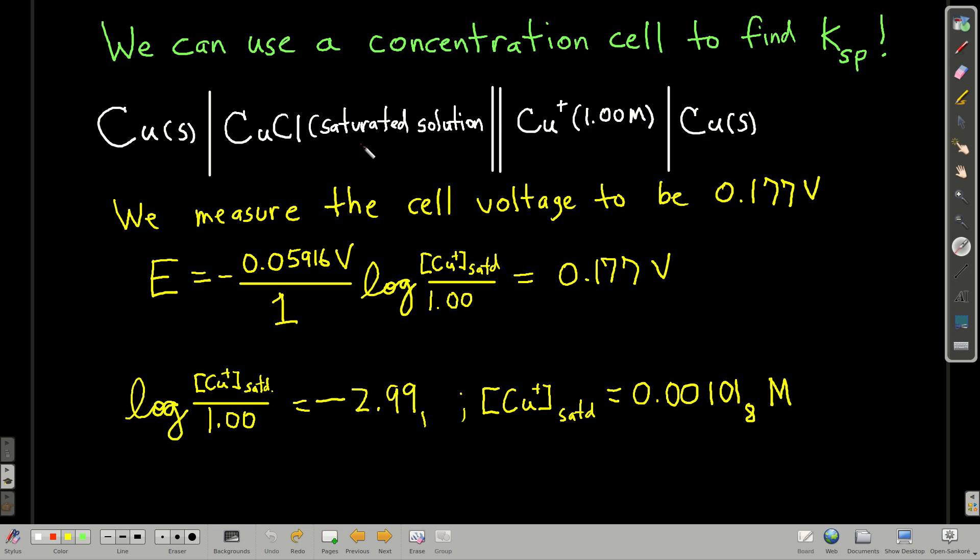Now, this saturated solution, the concentration of copper will almost certainly be a lot less than one molar. So this is the less concentrated or more dilute solution. So this is where oxidation will happen. Because again, what it's going to try to do, it's going to try to make the concentrations of copper 1 ion the same in both half cells.